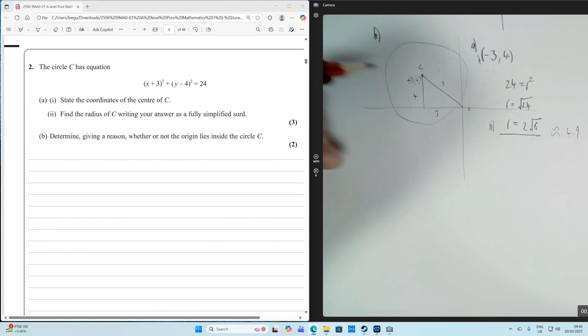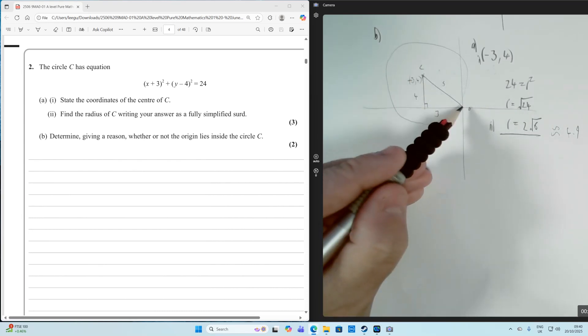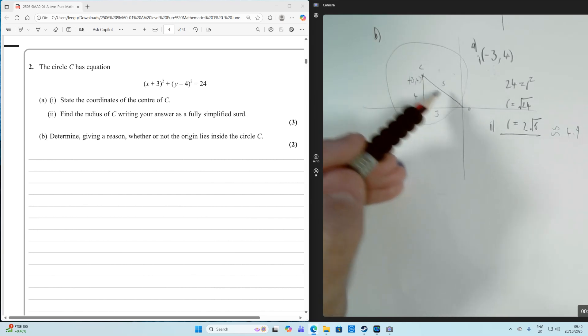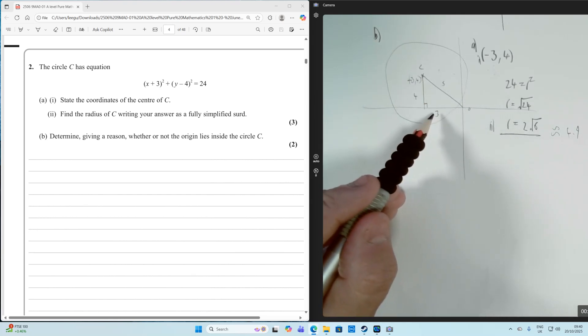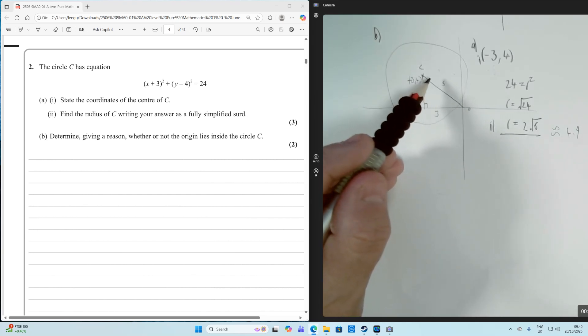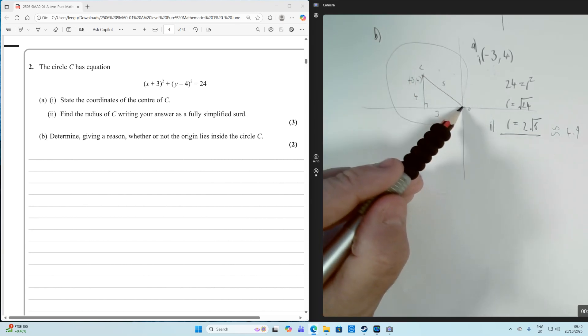We can use Pythagoras' theorem to work out the distance of the center from the origin. Using Pythagoras: 3² + 4² = 5². So the distance is 5.